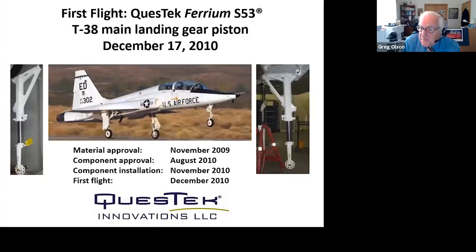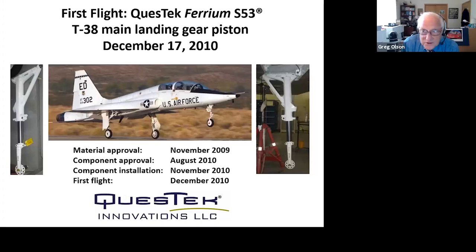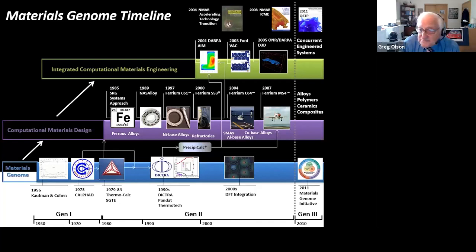A historic milestone was a decade ago with the first flight of QuestTek's Ferrium S53 stainless landing gear steel — the first stainless steel to meet the mechanical performance requirements of aircraft landing gear. This was driven by the need to eliminate toxic cadmium plating, making it a green steel solving an environmental issue. More significantly, it represented the first fully computationally designed and flight-qualified material, going all the way to flight in December 2010. This measures a high level of maturity of this technology even before the national MGI was created.